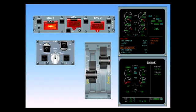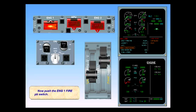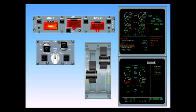Now, push the engine one fire push button switch. This arms the squibs shown by the white indications and closes fuel, hydraulic, bleed and pack valves of engine one. For this reason, the hydraulic system is added to the secondary failure list.